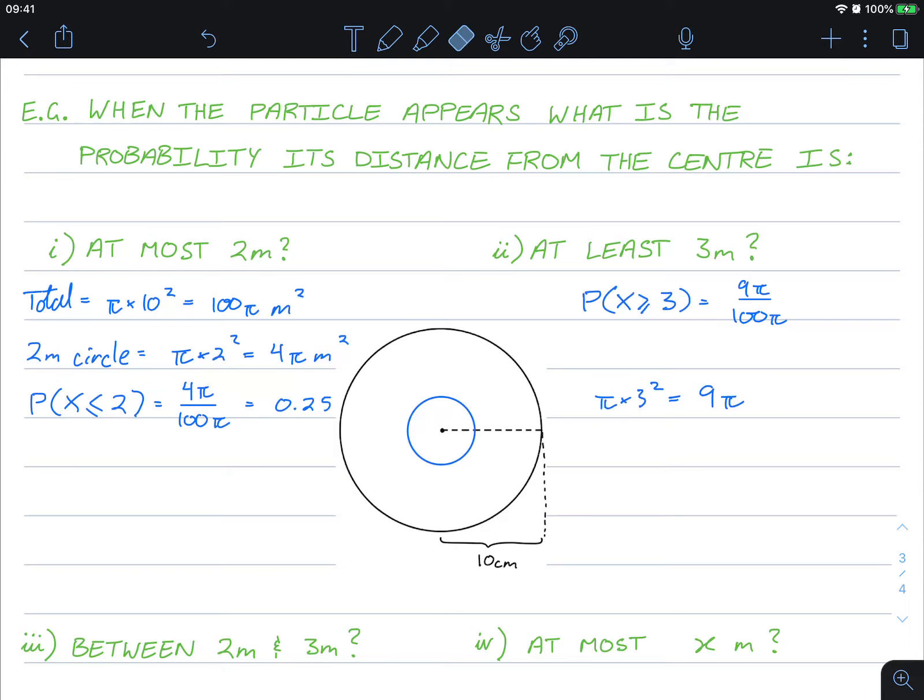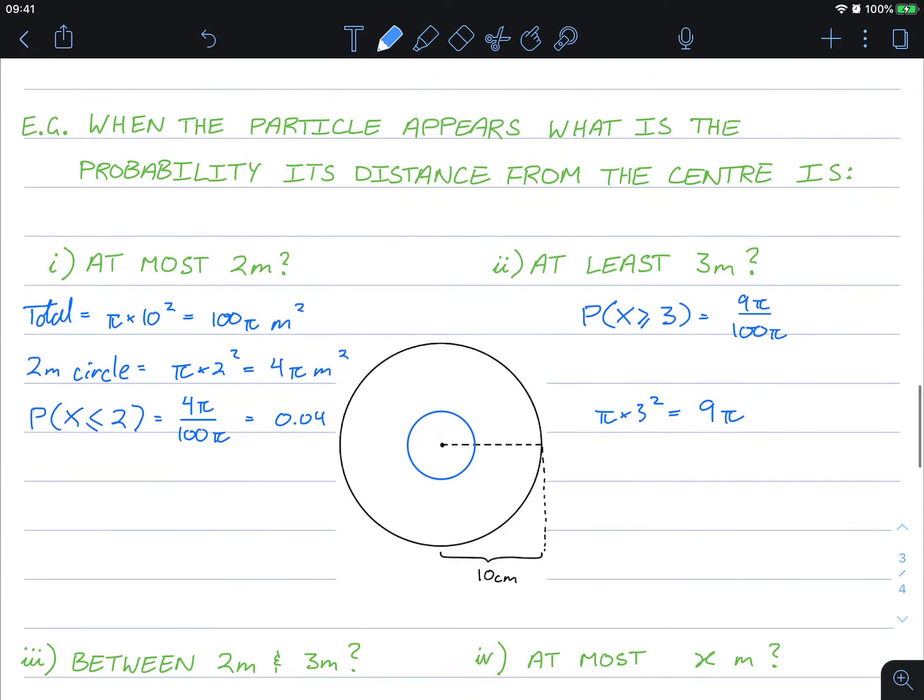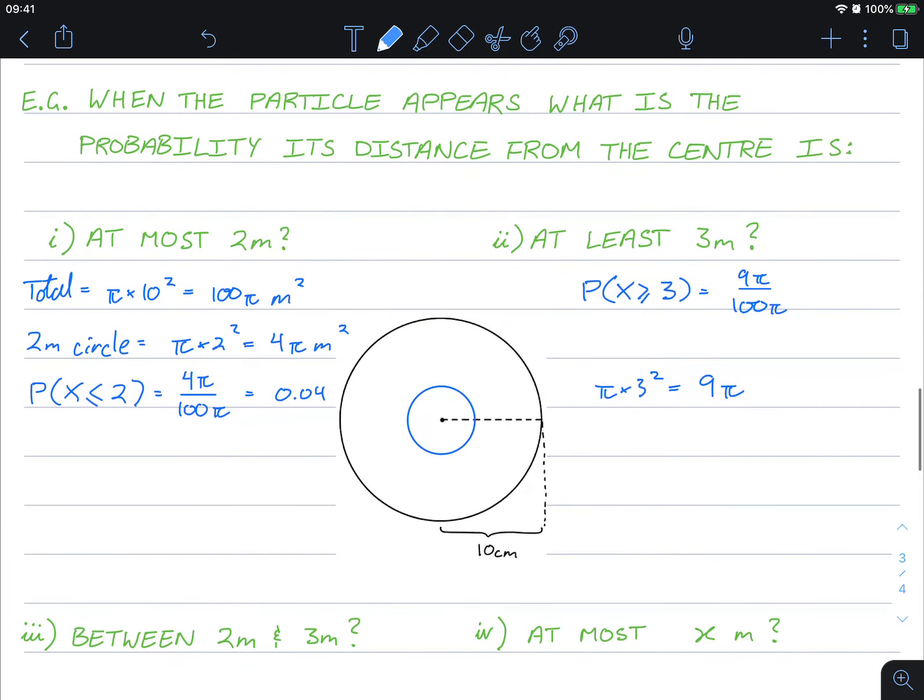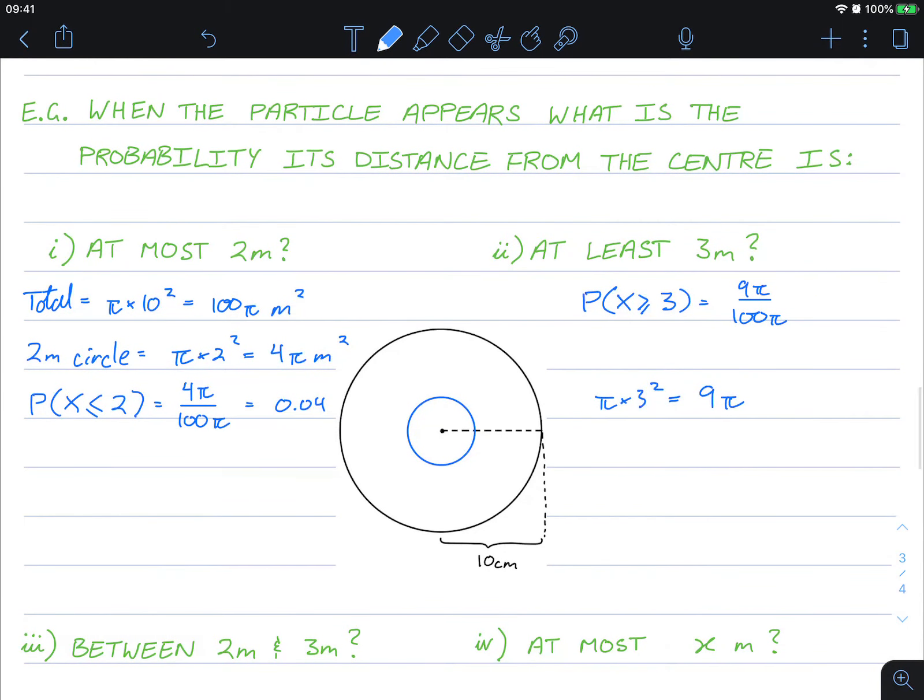Sorry, just saw the mistake that I had. Should be 0.04, not 25%. This is going to be 0.09, which is a 9% chance that it appears outside of a three meter circle.